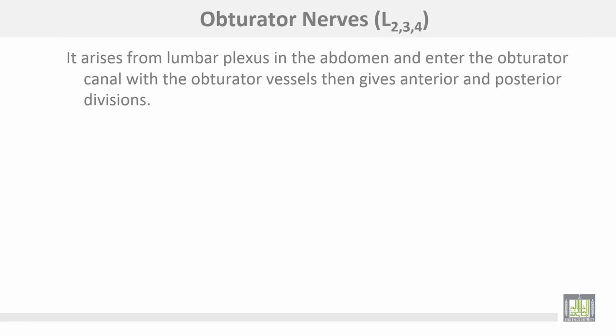The obturator nerve shares the same roots as the femoral nerve: lumbar 2, 3, and 4. It arises also from the lumbar plexus inside the psoas major in the abdomen and enters the obturator canal with the obturator vessels, then gives anterior and posterior divisions.